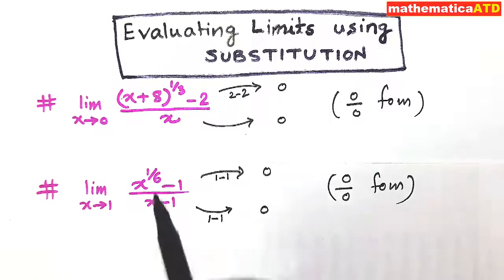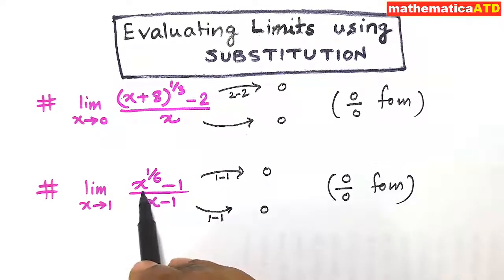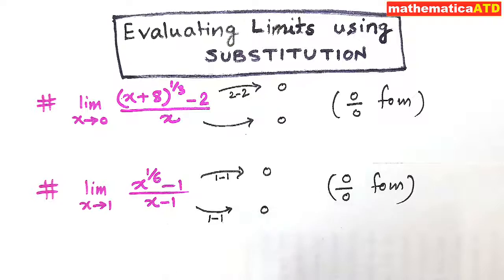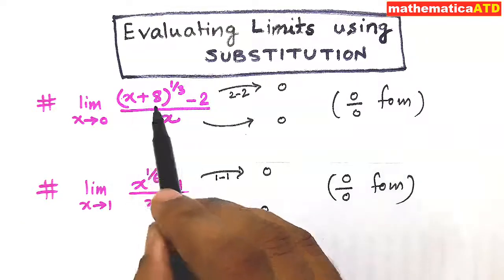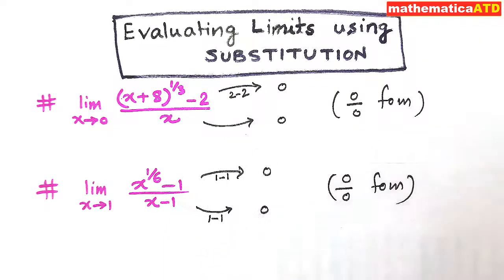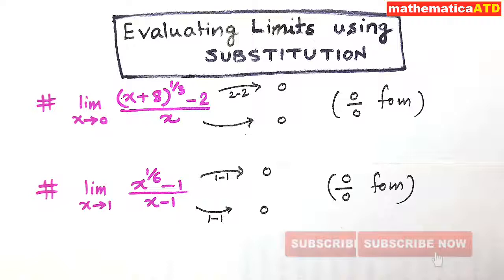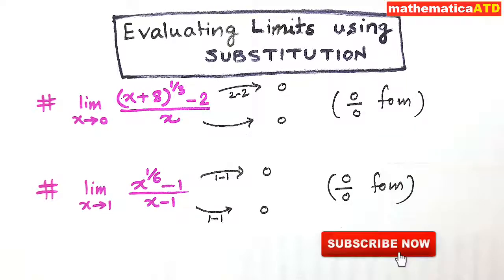But the radical is difficult here — x plus 8 whole to the power 1 third, and another one is x to the power 1 sixth. So we have to use the substitution method. In the first case, we shall substitute x plus 8 whole to the power 1 third as z, or in the second example, x to the power 1 sixth as equal to z. If you are new here, please subscribe the channel and watch the complete video for proper knowledge.